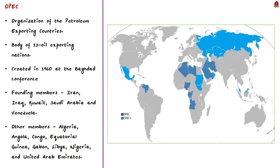Firstly, coming to the OPEC. OPEC stands for Organization of the Petroleum Exporting Countries. It is a permanent intergovernmental organization comprises of 13 oil exporting nations. It was created in the year 1960 at the Baghdad conference by 5 countries. They are Iran, Iraq, Kuwait, Saudi Arabia and Venezuela. These countries are also known as founding members of the OPEC.